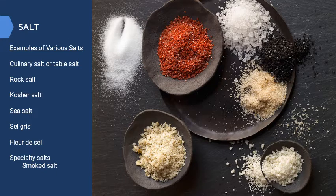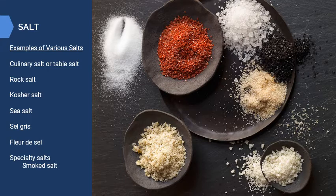Sea salt carries the flavors of the ocean and may be slightly brinier or earthier. Sel gris is a sea-salt style that is typically more gray. Fleur de sel is another example. Specialty salts include smoked salts, Himalayan pink salt, and flavored salts such as espresso salt — made by mixing salt with espresso grounds — or burgundy salt, created by flooding salt with burgundy wine and allowing it to dehydrate and recrystallize.